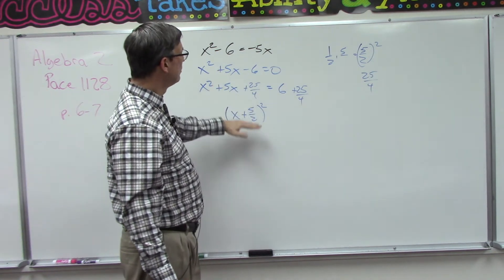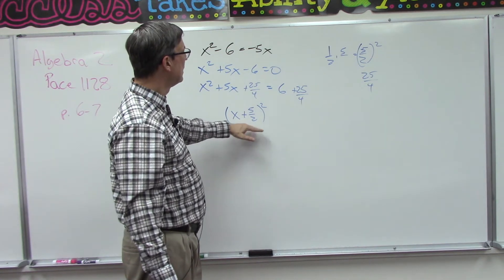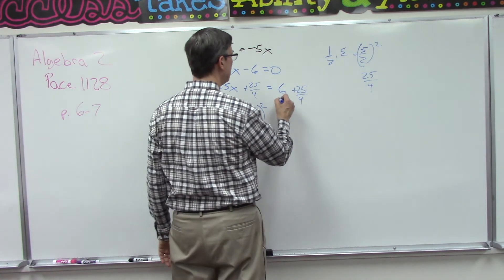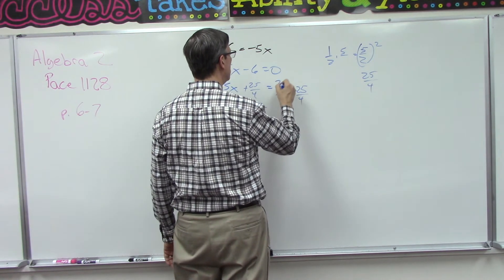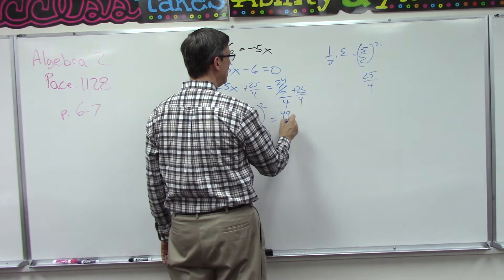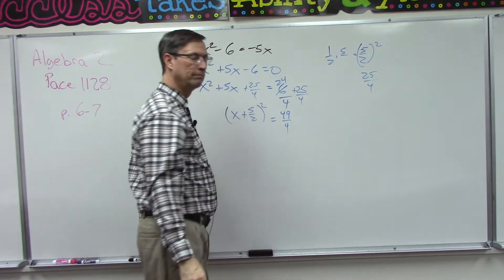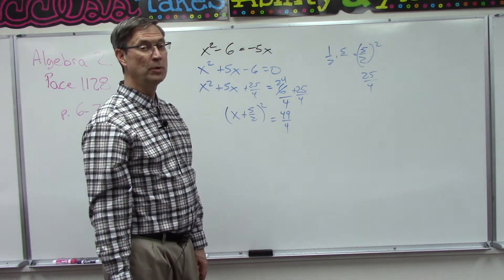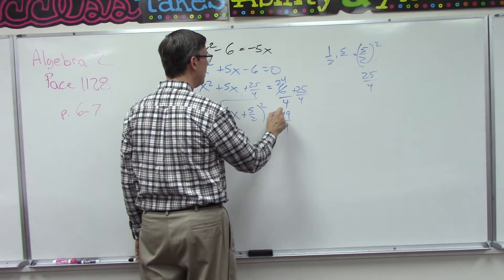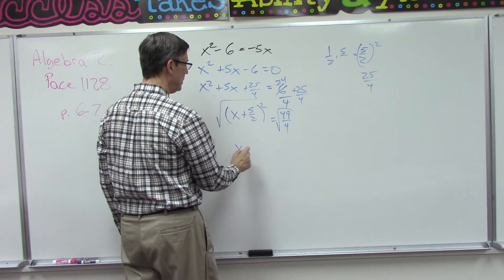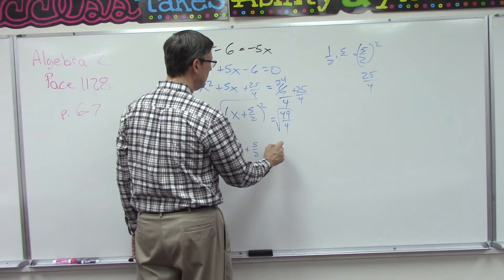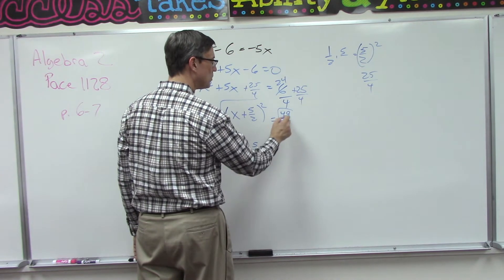Alright, so we're going the other direction, we're factoring this. Now we need to add these two. Well, we're going to get a common denominator, so the common denominator is going to be 4, so that'll be 24, so that's 49 over 4. It's coming back to you, remember doing this? Okay, then you do the square root of both sides. This just pops out, and then over here we get plus or minus the square root of 49 is 7, the square root of 4 is 2.